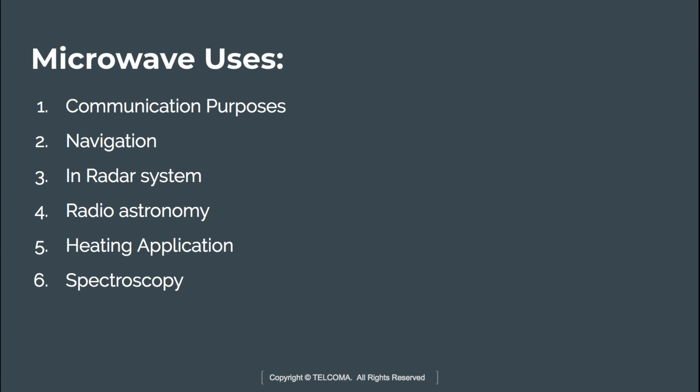Microwaves have a large field of usage, from communication to navigation to heating appliances. For communication, microwave frequencies are used for transmission and reception of large amounts of data over networks using line-of-sight communication. For navigation, the Global Navigation Satellite System (GNSS) includes the American GPS, Russian GLONASS, and others. These systems use microwave signals in the range of about 1.2 GHz to 1.6 GHz for navigation purposes.